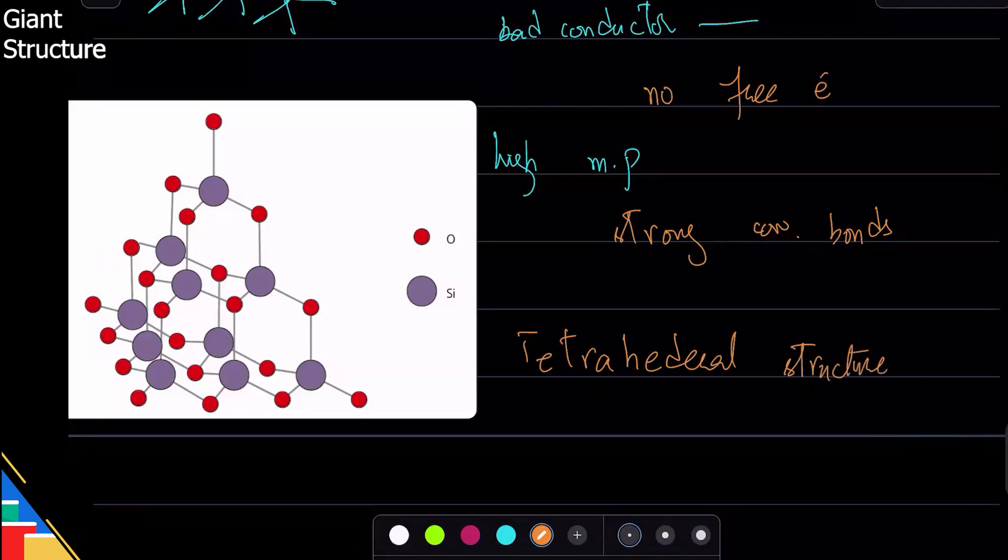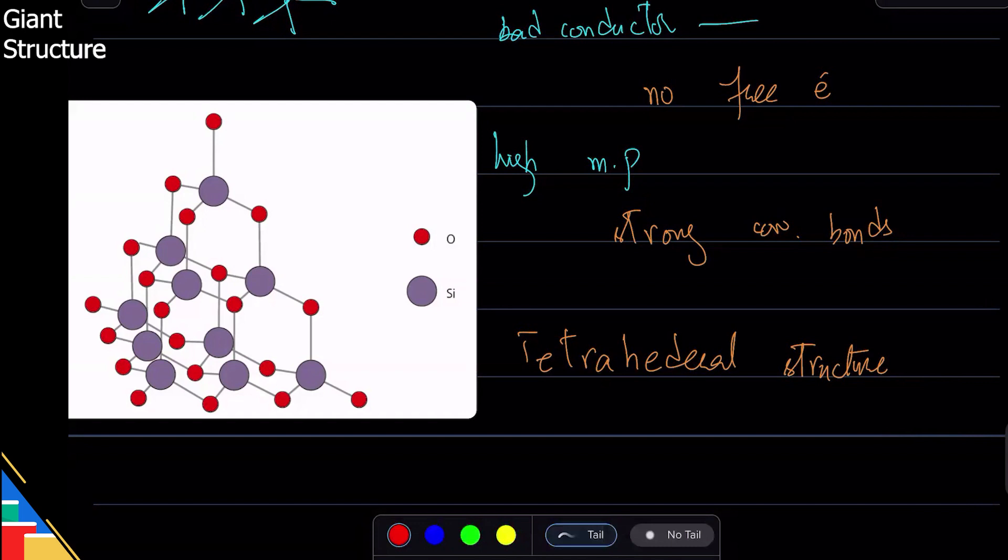Even if you don't use the word that's fine, but just know that this exists and it's tetrahedral because every atom is joined with four other atoms, and similarly every oxygen is joined with two silicon.